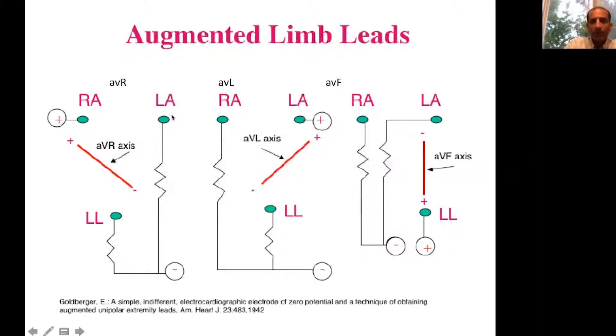AVR is the augmented right arm lead, AVL is the augmented left arm lead, and then the augmented lead in the left foot is AVF.